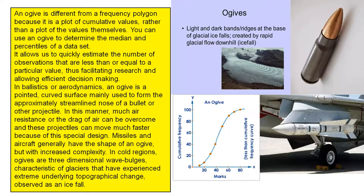In ballistics or aerodynamics, an OGIVE is a pointed, curved surface mainly used to form the approximately streamlined nose of a bullet or other projectile. In this manner, much air resistance, or the drag of air, can be overcome and these projectiles can move much faster because of this special design.